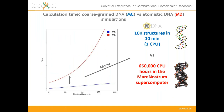To illustrate the computational efficiency gain: for a DNA with 56 base pairs, atomistic molecular dynamics computational time increases exponentially with increasing base pairs, while the coarse-grain model used in mcDNA increases only linearly. As an example, 10,000 structures can be sampled in 10 minutes on a normal laptop CPU, while the equivalent atomistic MD simulation takes 650,000 CPU hours on the MareNostrum supercomputer in Barcelona — a huge improvement with only minor loss of resolution.